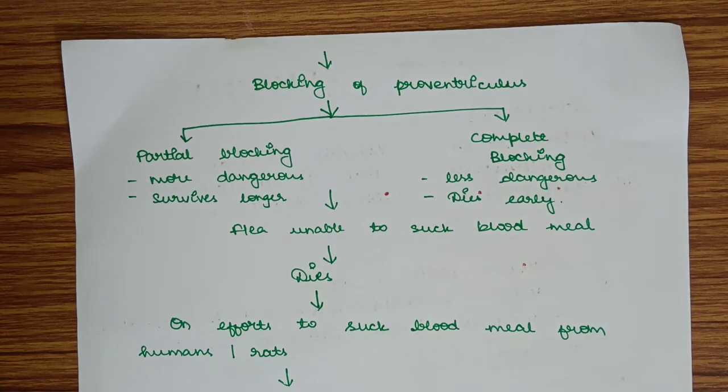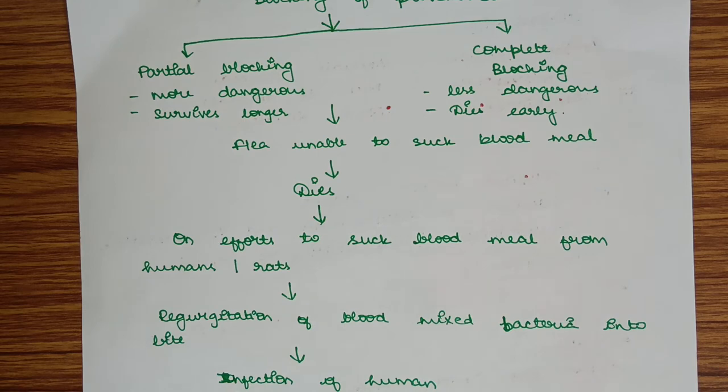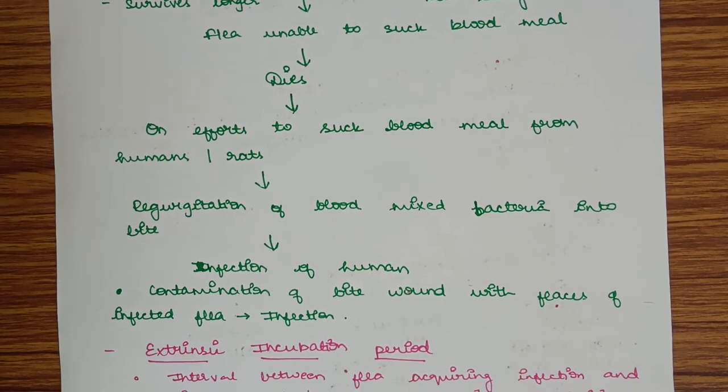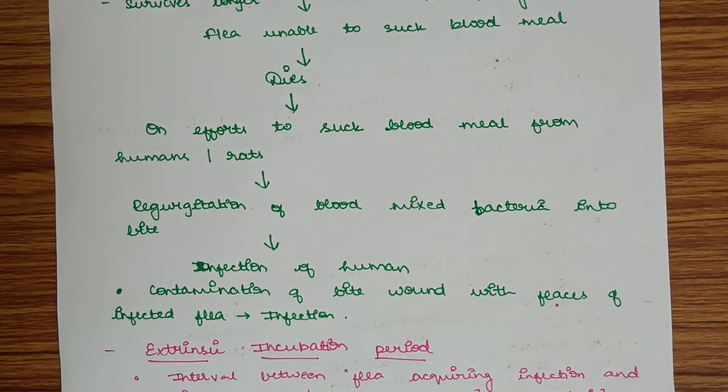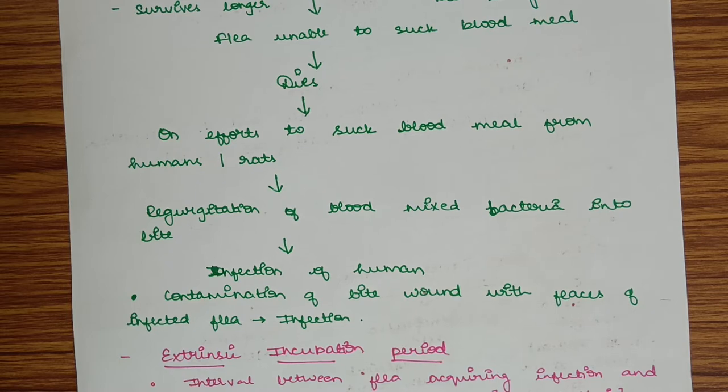This blocking of proventriculus means the flea is unable to suck blood, so it dies. On efforts to suck blood before dying, it regurgitates blood mixed bacteria into the bite, leading to infection of the human.